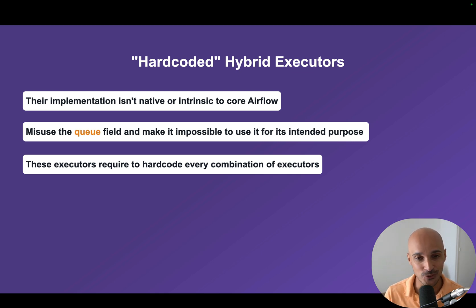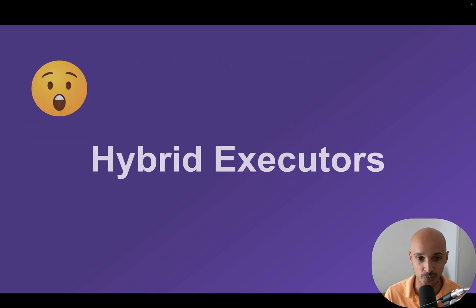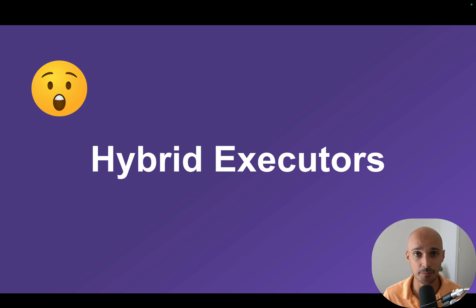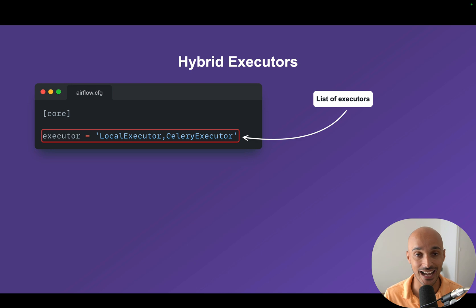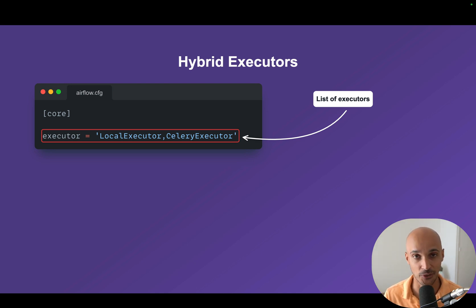So that's why in Airflow 2.10, you have a new concept of hybrid executors that are not hard-coded. Imagine you want to use the local executor and the Celery executor — a combination that doesn't exist before. With the new hybrid executors, you can now specify that as a list of executors for the executor Airflow setting. Just like that, you tell Airflow that you want to use two executors: the local executor and the Celery executor.